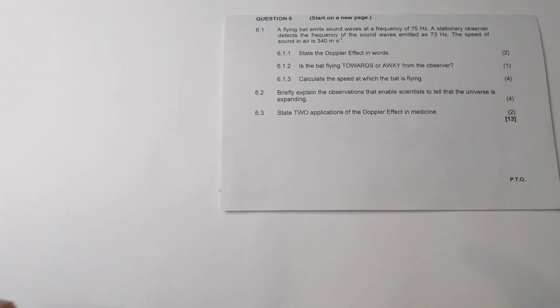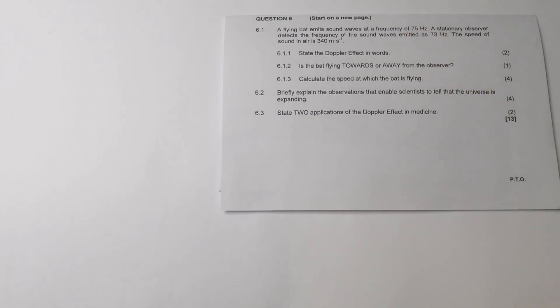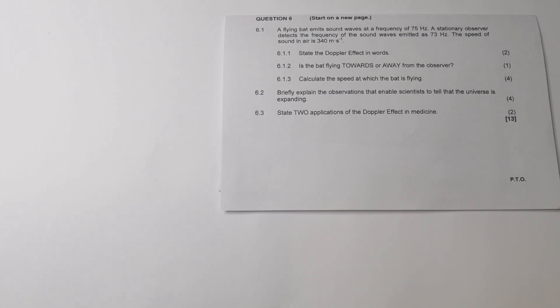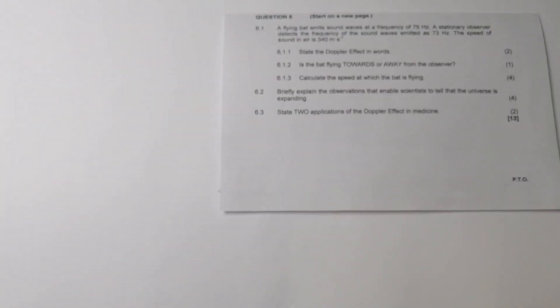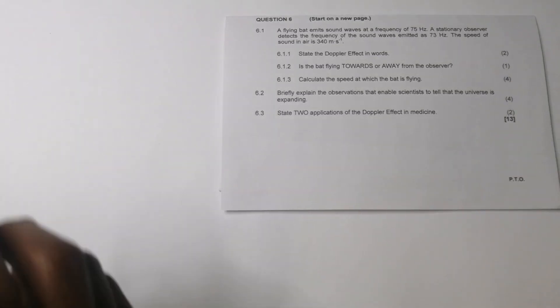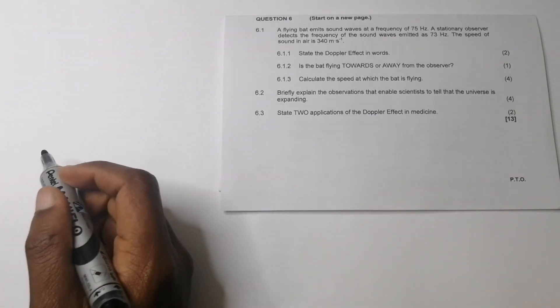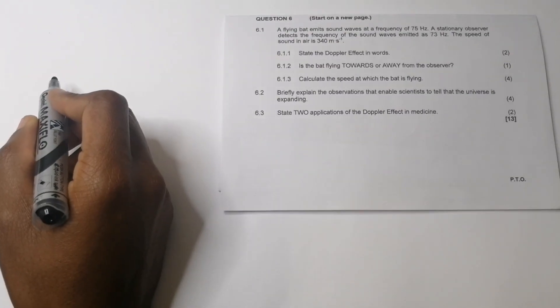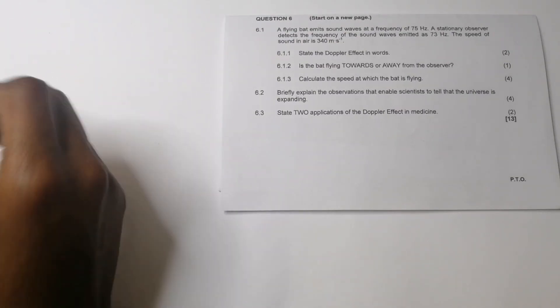Obviously, if that frequency was higher than the emitted frequency, then it would mean that it would be moving towards. Now, they give us the speed of sound that is in air to be 340 meters per second. So we've answered that question. We said it's moving away. So they say to you, calculate the speed at which the bat is flying. I wish I could be able to draw it. But you know, my drawings are terrible.